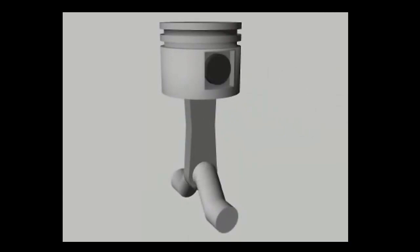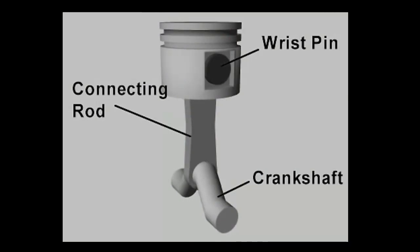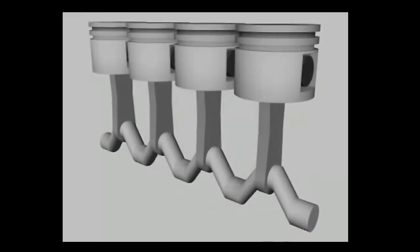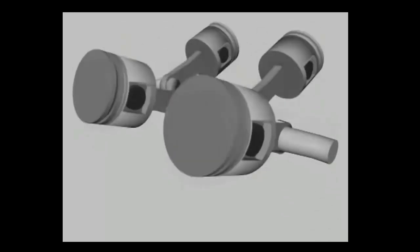The pistons are directly driven through a wrist pin and connecting rod from a crankshaft. Depending on their size, reciprocating compressors may have one or more cylinders. Multiple cylinders may be arranged in line, opposed, or in a V.